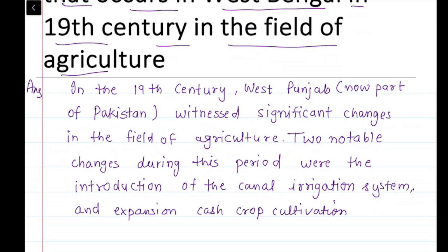Cash crop cultivation means when crops are grown for selling — not for personal use, but basically for the market, for selling. So this expanded greatly in the 19th century.